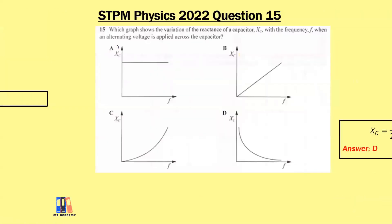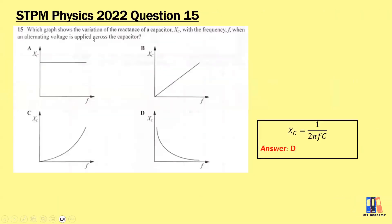We move on to the next question: Which graph shows the variation of the reactance of a capacitor with the frequency when an alternating voltage is applied across the capacitor? This is quite simple. We have the formula of the reactance is 1 over 2πfc. So the reactance is inversely proportional to the frequency. The answer would be D.